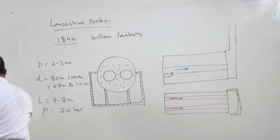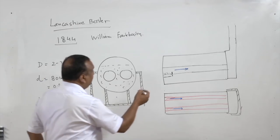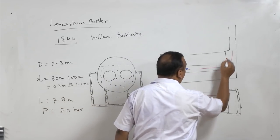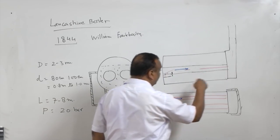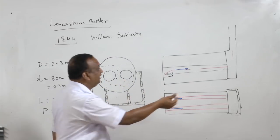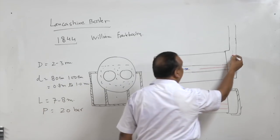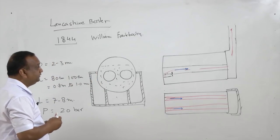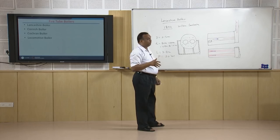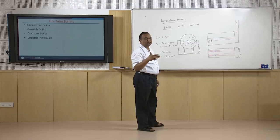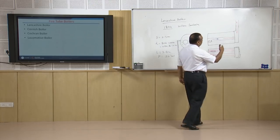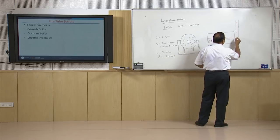Flue gases generated here leave from the chimney after circulation in the boiler — there is natural circulation. The movement of the flue gases is controlled by the damper. A damper is provided here, and the damper controls the flow of flue gases.